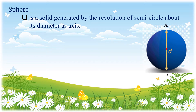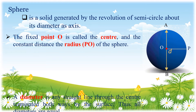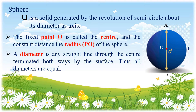AB is the diameter and point O is the center, and PO is the radius. In the diagram, the fixed point O is called the center and the constant distance PO is the radius of the sphere. Take note that a diameter is a straight line through the center terminated both ways by the surface, so all diameters are equal.